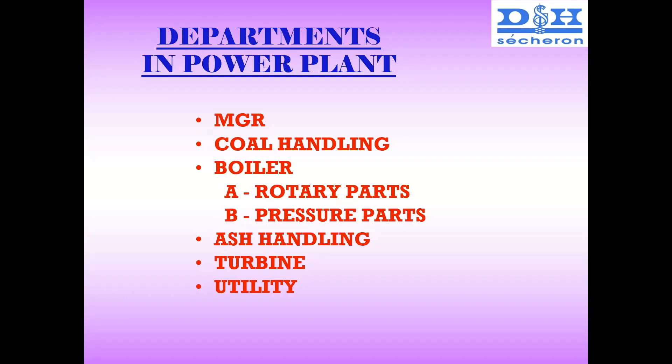In the coal handling plant, there will be storage of coal, pulverization of coal, and crushing of coal. The next department is the boiler, which has two sections: rotary parts and pressure parts.